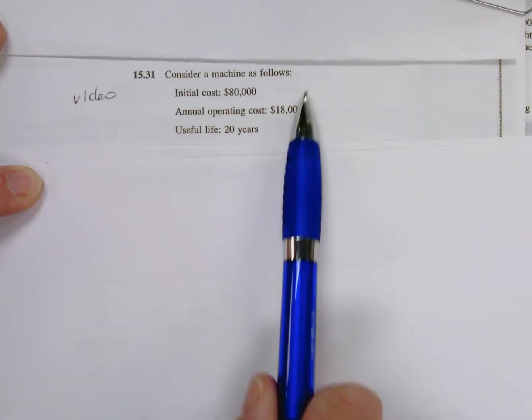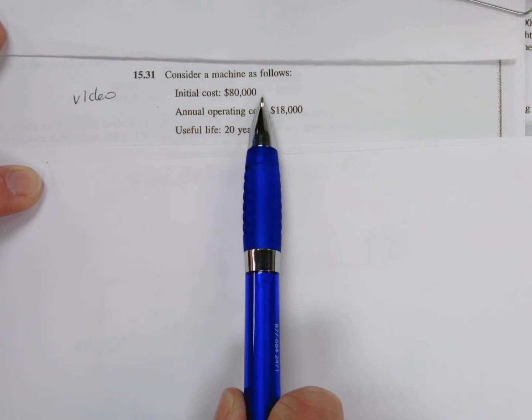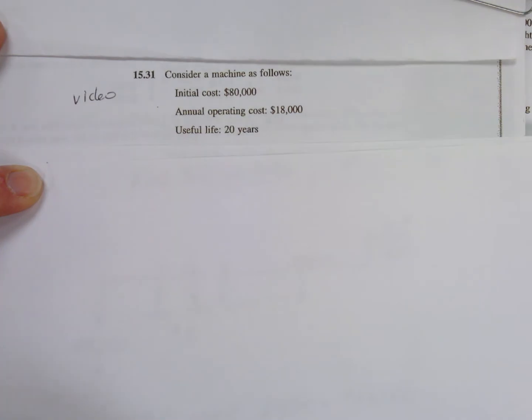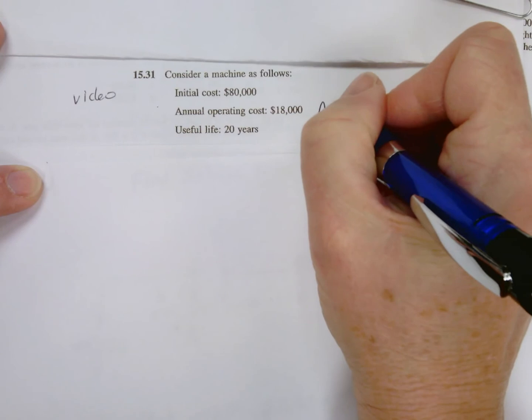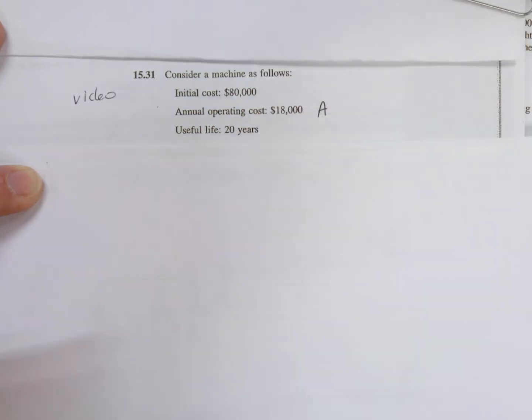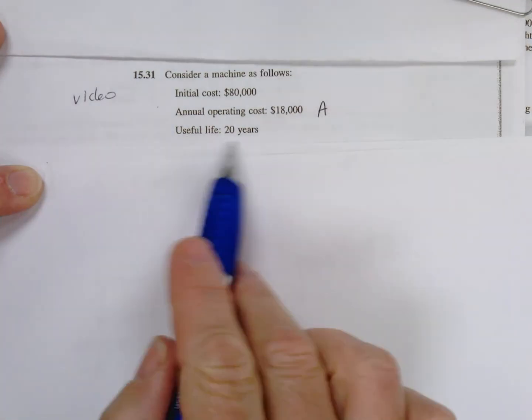Problem 15.31 says consider this machine: the initial cost is $80,000, the annual operating cost is $18,000, so that'll be an annuity, annual equal cost for a term of 20 years.